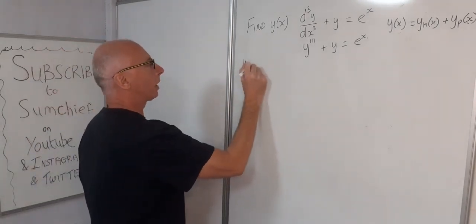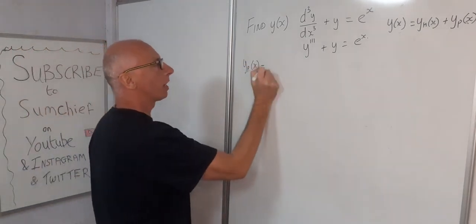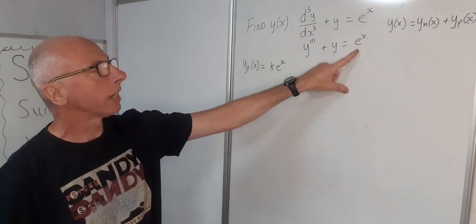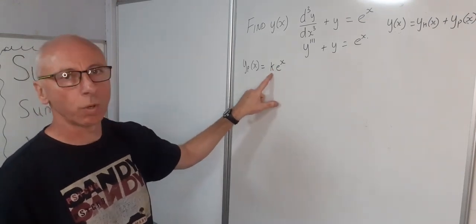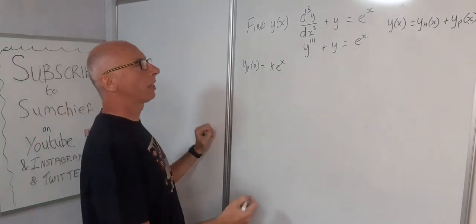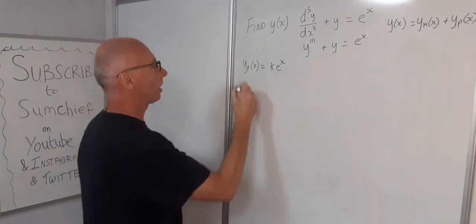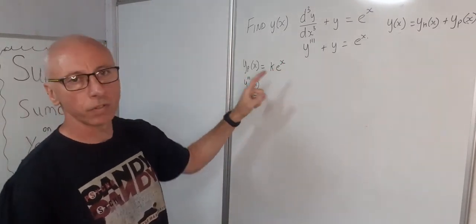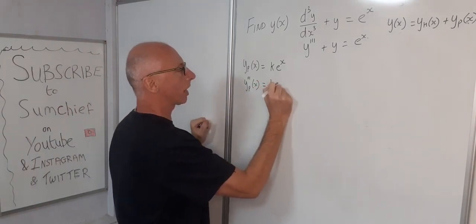So y_p of x, our particular solution or particular integral, is going to take the form of something like k·e^x because we've got an e^x on the right-hand side with a coefficient of one. We're not sure what the constant k is going to be for our particular solution. So we assume that form and now we take the third derivative of this to plug in. The third derivative of k·e^x is also k·e^x, since the derivative of e^x is always e^x.